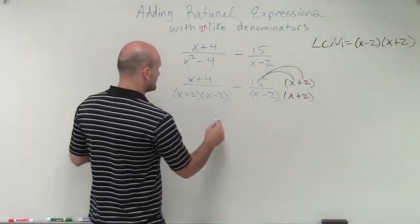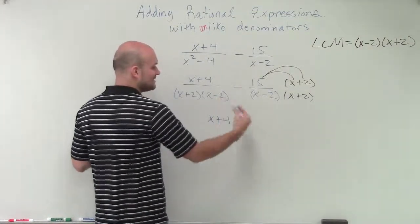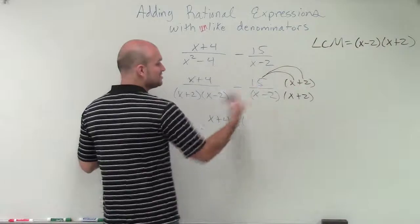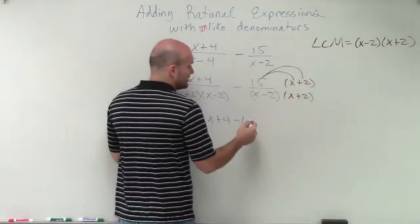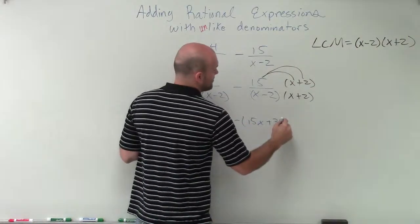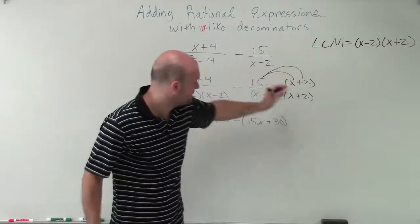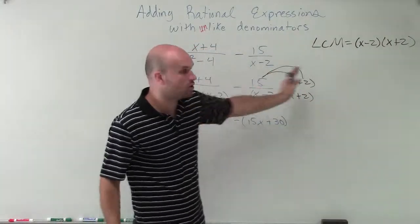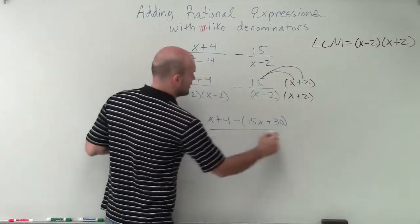All right, so therefore I'm going to have an x plus 4 minus. Now I'm going to keep this, I'm going to put this in parentheses to make sure that I follow this rule. So it's minus everything up here, which is an expression of 15x plus 30. You're subtracting the whole term. Not just the 15, you're subtracting the whole term. Or you could say minus 15 and then multiply it out, but we'll get to that.